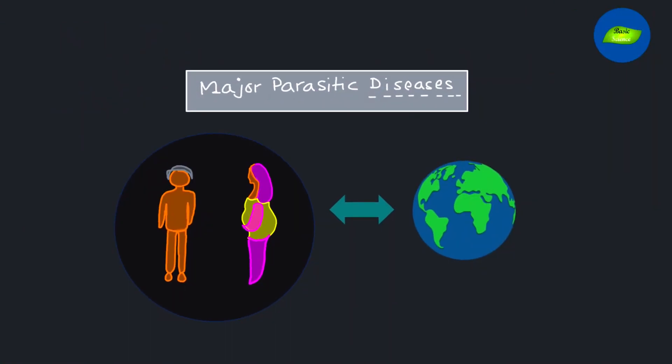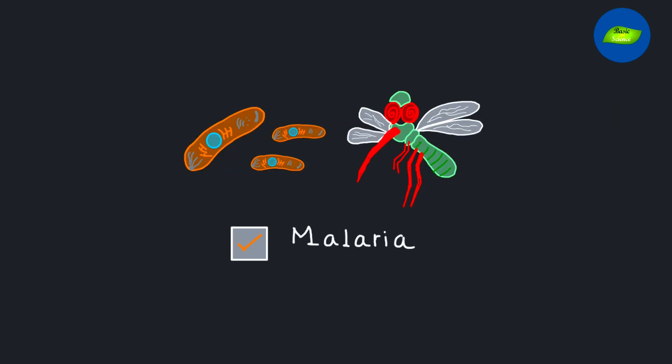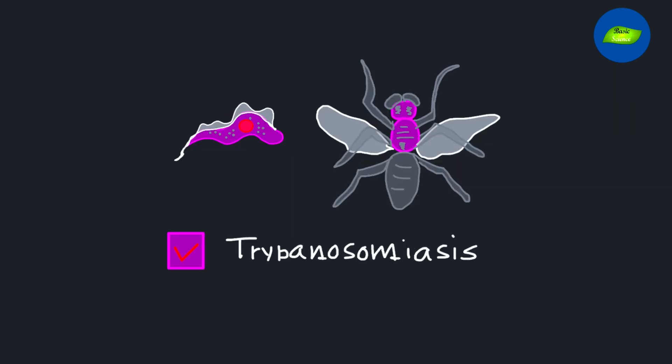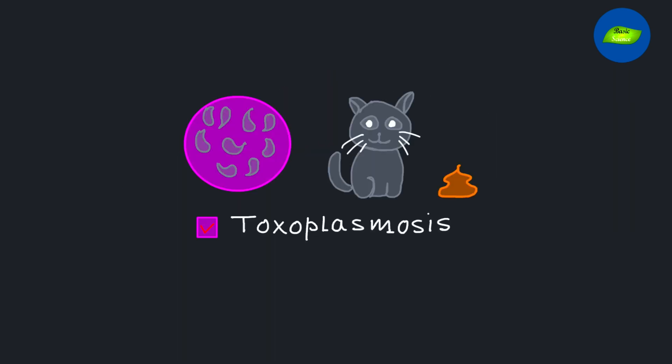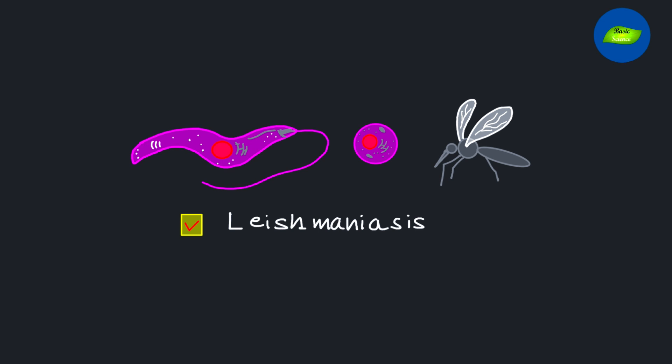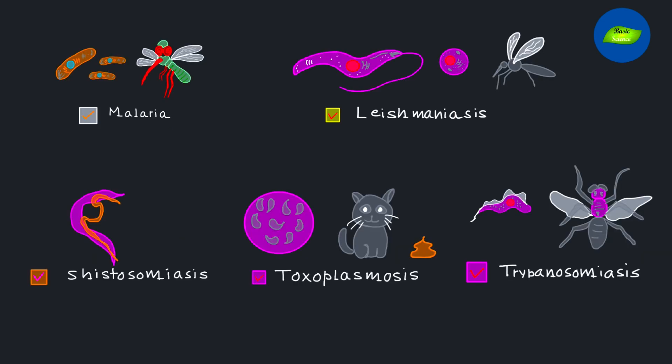Welcome to the Basic Science Series. I am your host Dr. Lukindakumar, and today we will understand parasitic diseases in humans including malaria, trypanosomiasis, schistosomiasis, toxoplasmosis, and leishmaniasis. We will discover how these diseases are transmitted and their impact on human health.